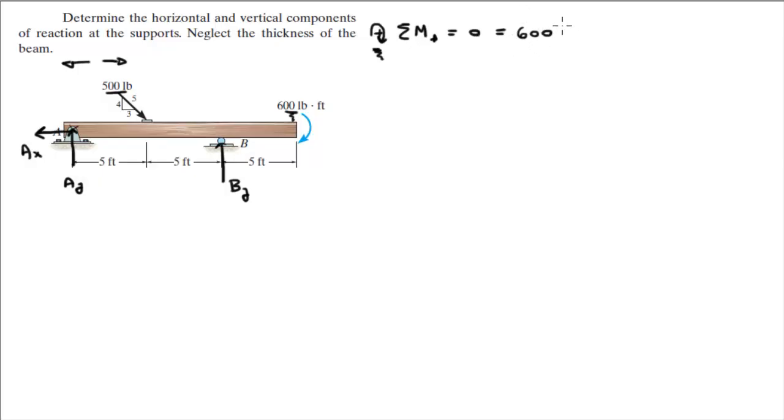the 600 plus the moment being created by this 500 pound force. Now this 500 pound force has two components, a Y component going straight down and an X component going straight to the right.